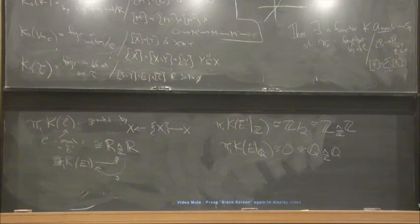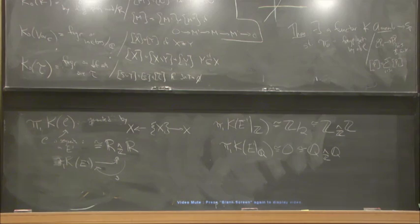For future work, I would really like to identify various structures on these groups coming from the spaces. For instance, the Dehn invariant — it would be very nice to construct it as a map of spectra, but this turns out to be very difficult. And there's motivic integration that I would really like to see if it can be constructed, or if there's an obstruction to it being constructed. And that's what I have to say. Thank you very much.